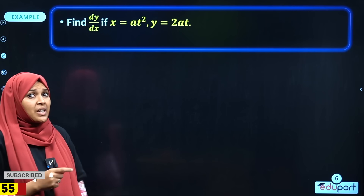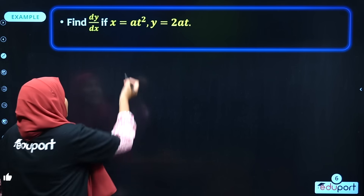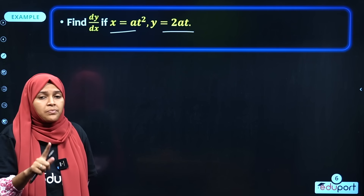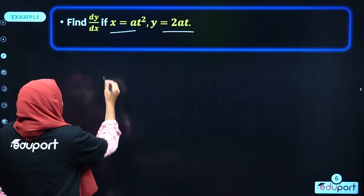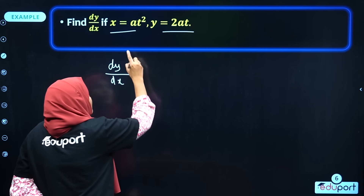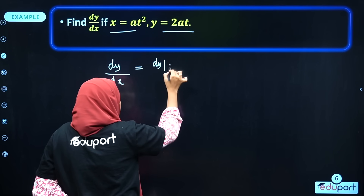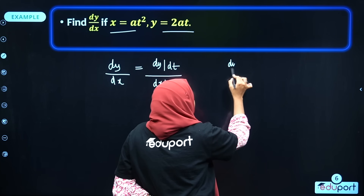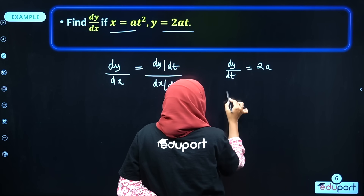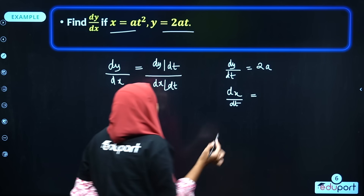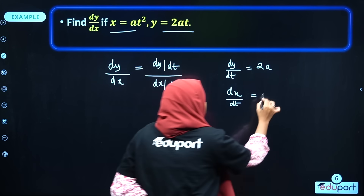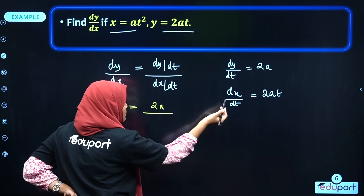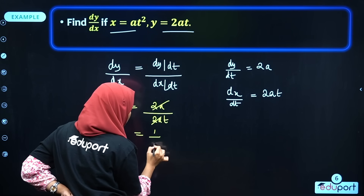The next question: if x = at² and y = 2at, find dy/dx. Since x and y are both given in terms of the parameter t, we use parametric differentiation. dy/dx = (dy/dt) / (dx/dt). Here dy/dt = 2a, and dx/dt = 2at, so dy/dx = 2a / (2at) = 1/t.